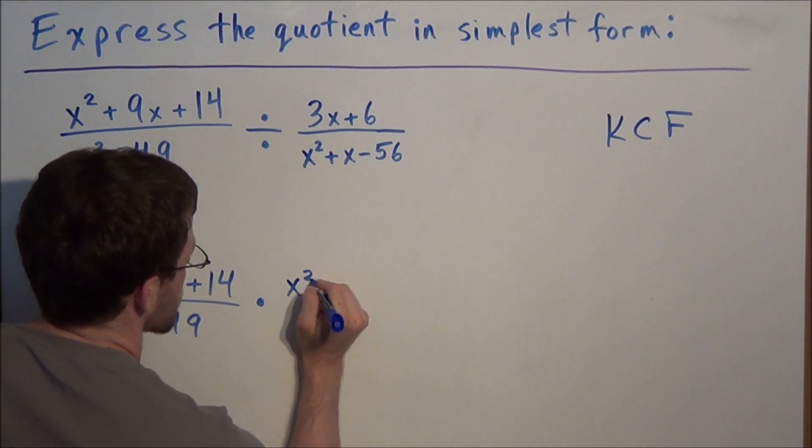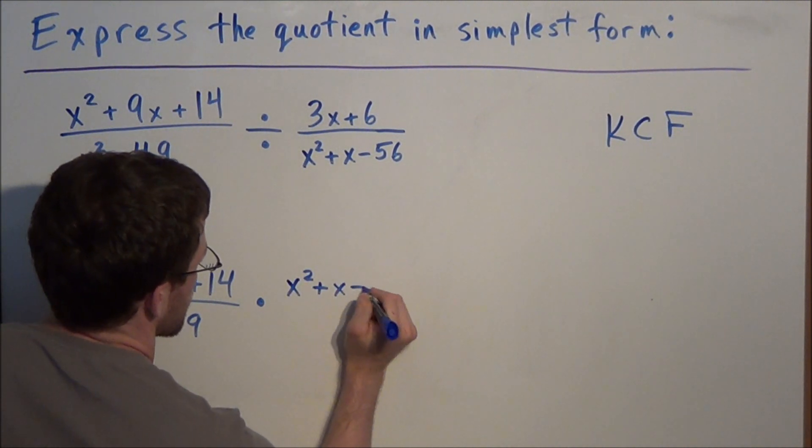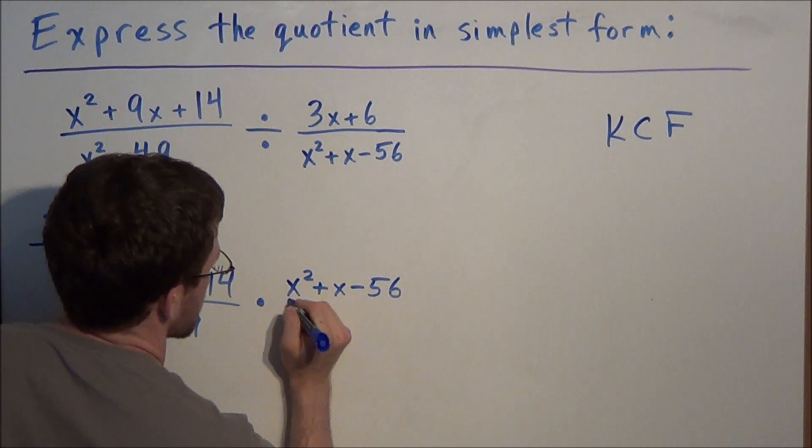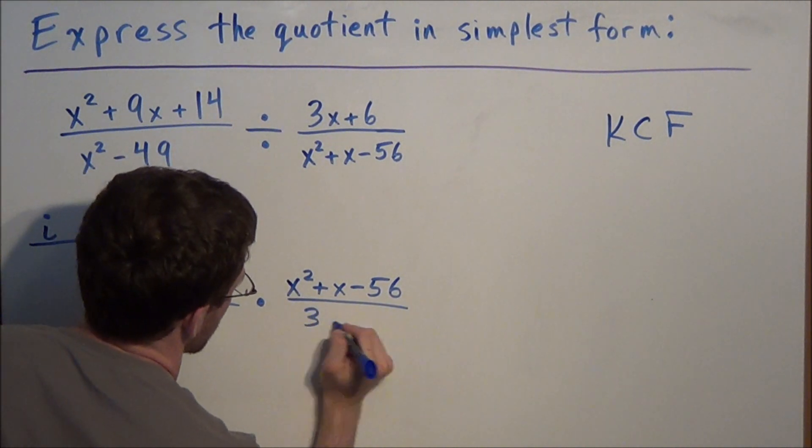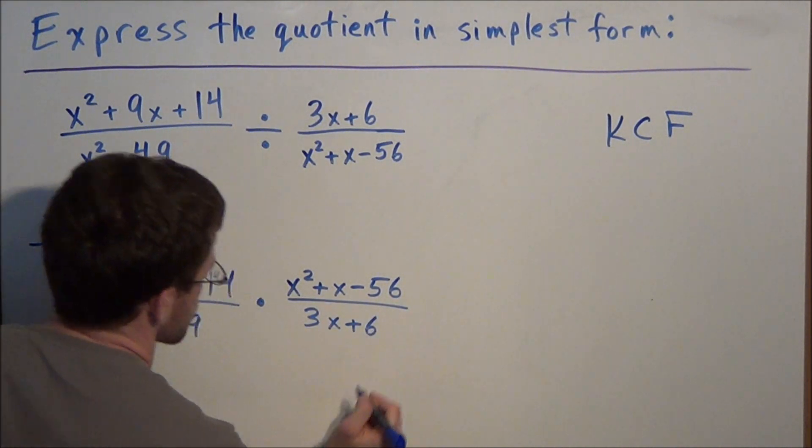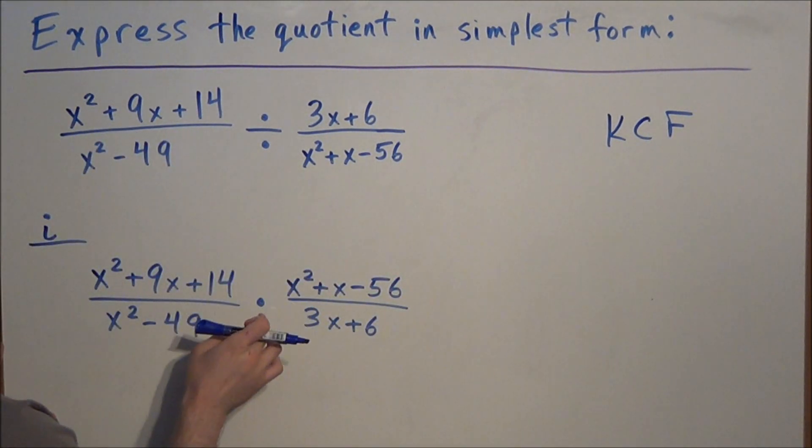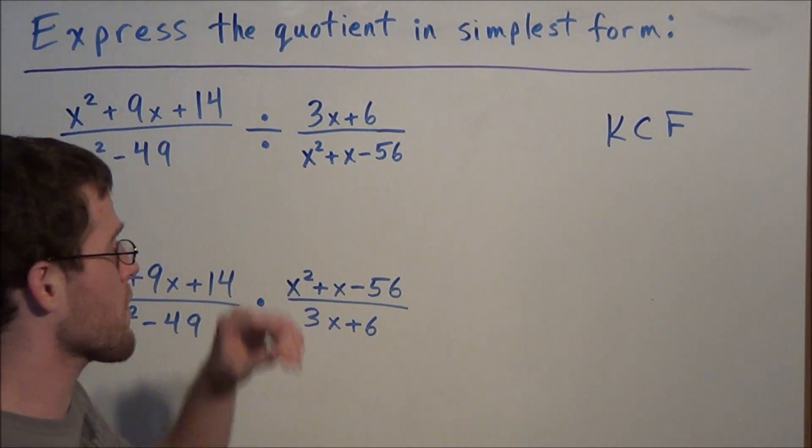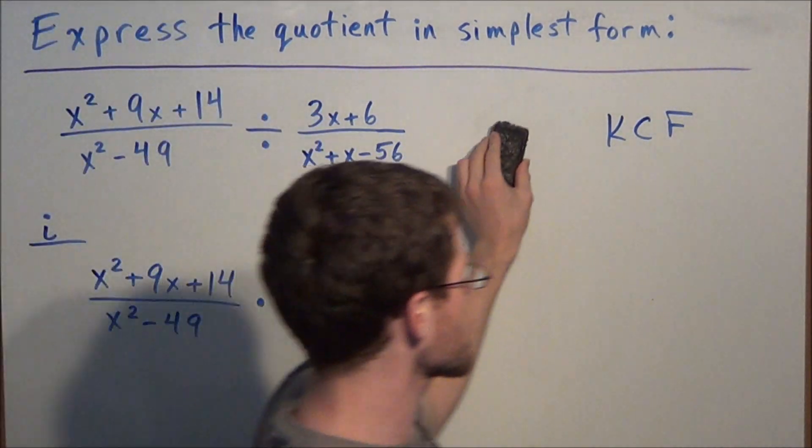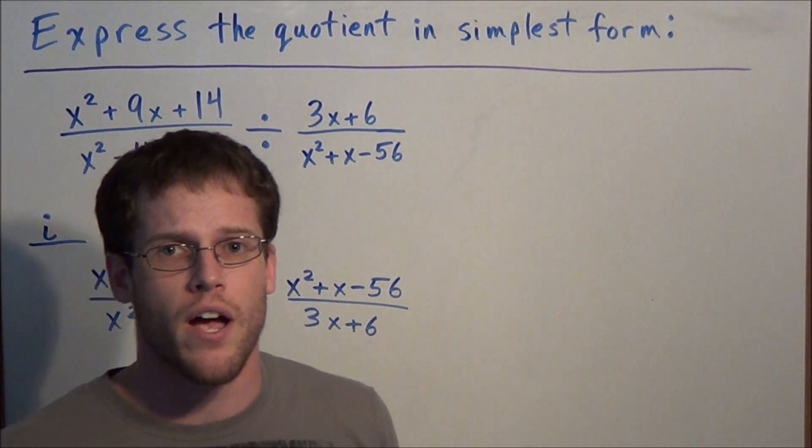So we have x squared plus x minus 56 over 3x plus 6. Once again all we're doing is using keep change flip to rewrite the original problem as a multiplication example. Now from here we just treat this like a multiplication of rationals problem.